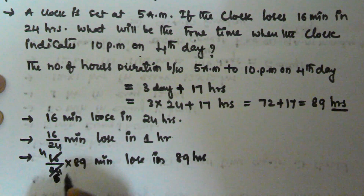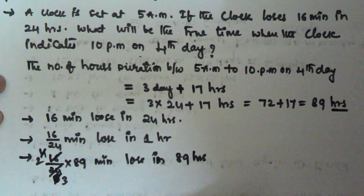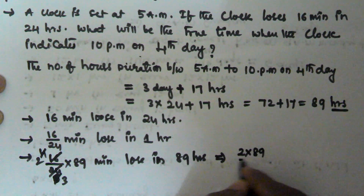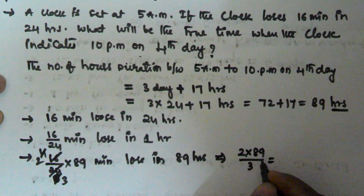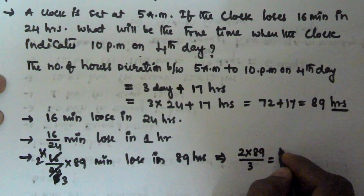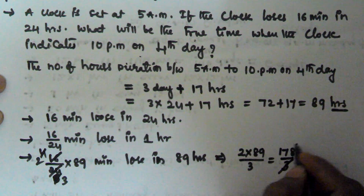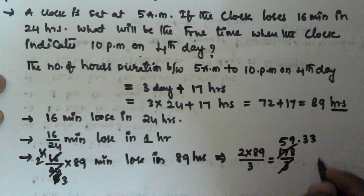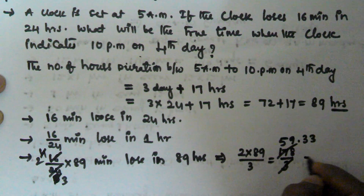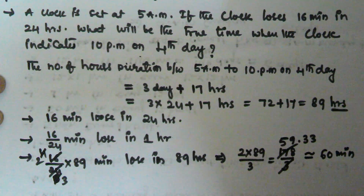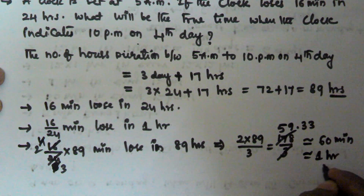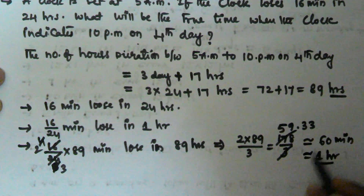So that comes out to 2/3 × 89 = 178/3 minutes, which is approximately 59.3 minutes — roughly 60 minutes. So this is approximately 60 minutes, which equals 1 hour. In 89 hours, that watch loses approximately 1 hour.